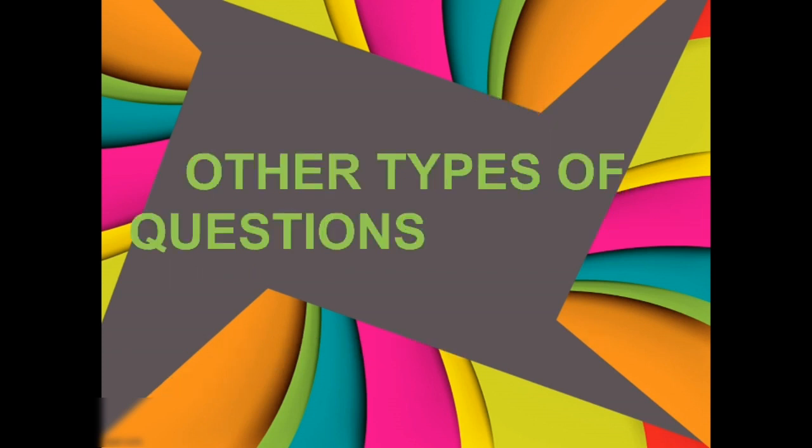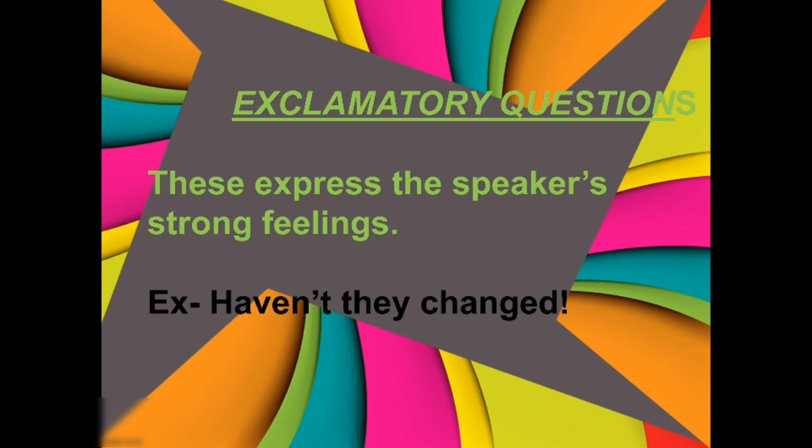There are some other kinds of questions also. Let's see them: exclamatory questions. You all know — remember exclamatory sentences? These express the speaker's sudden feelings. Speakers means jo bol raha hai. Like: haven't they changed? Kya voh log change ho gaye hain? Or isn't she cute? In these, the feelings of that person — the one who's speaking — are described. And we are having exclamation mark at the end of these questions always.